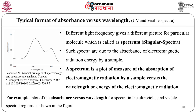A spectrum is a plot of the measure of absorption of electromagnetic radiation by a sample versus the wavelength or energy of the electromagnetic radiation. For example, it is general practice to plot absorbance versus wavelength for spectra in the ultraviolet and visible spectral regions, as shown in the figure.